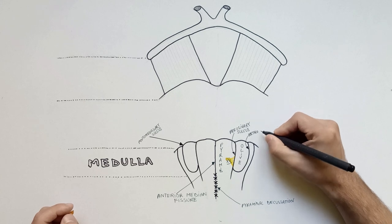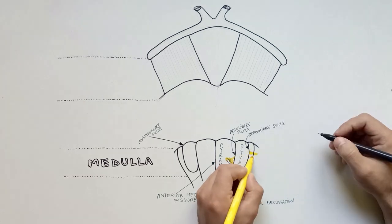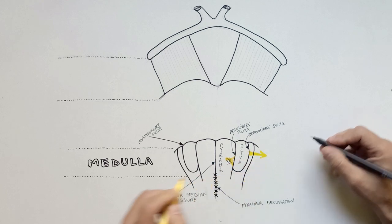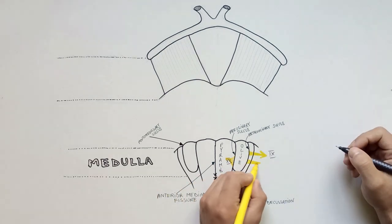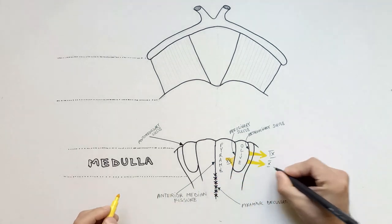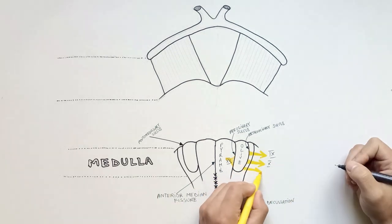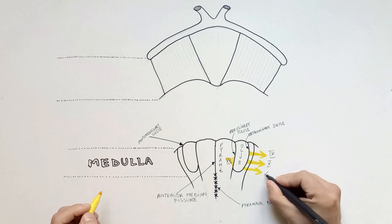Behind olive is the retroolivary sulcus. At this level from above downwards originates the glossopharyngeal nerve or the ninth cranial nerve, the vagus nerve or the tenth cranial nerve, and the cranial root of accessory nerve or eleventh cranial nerve.